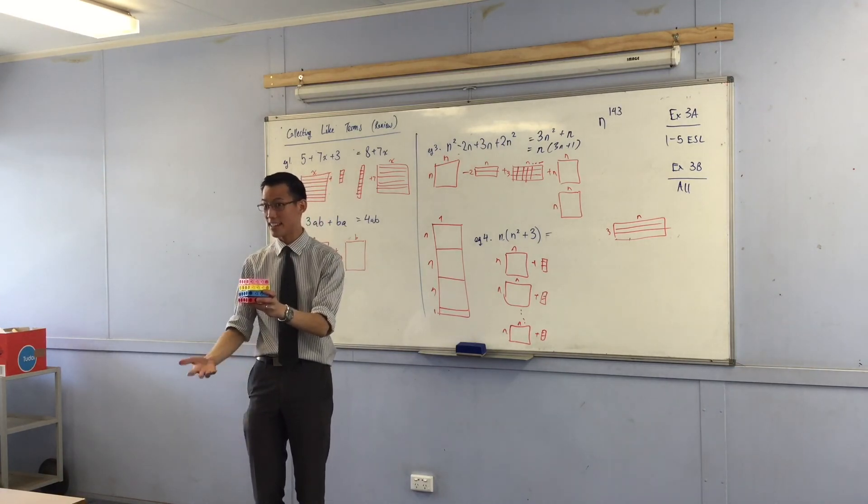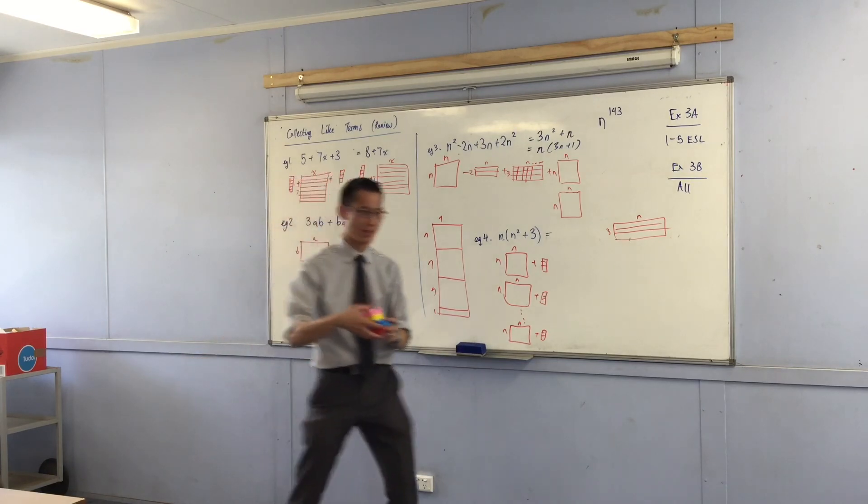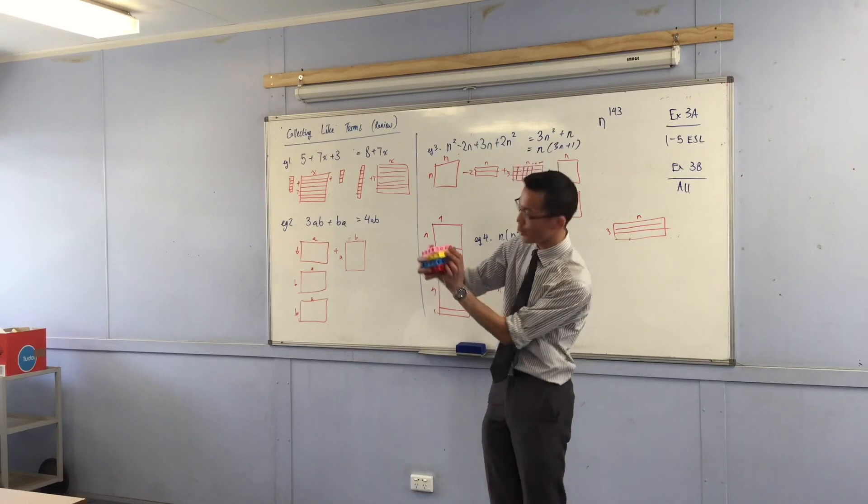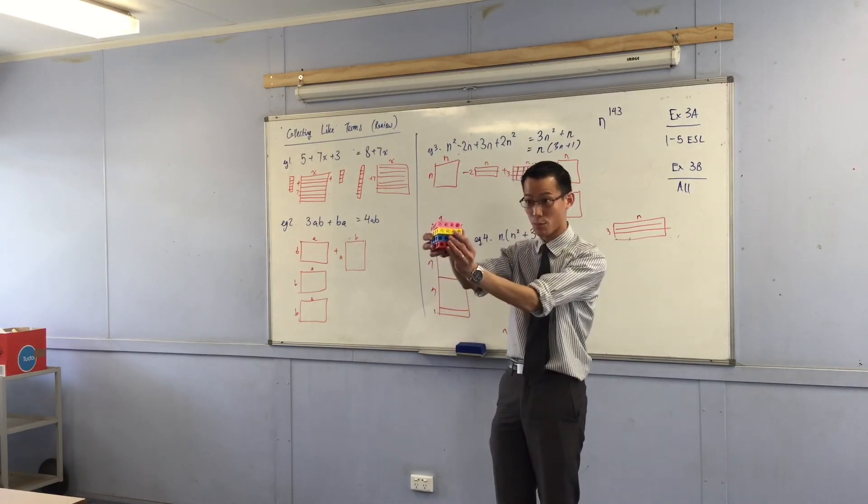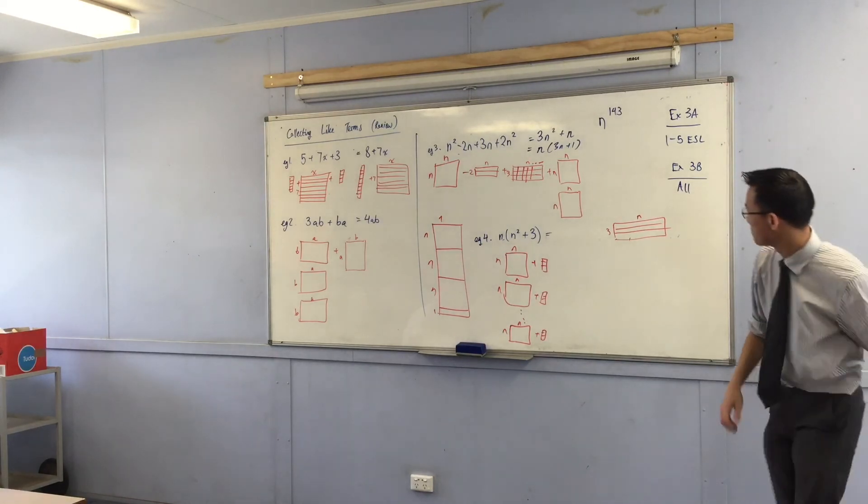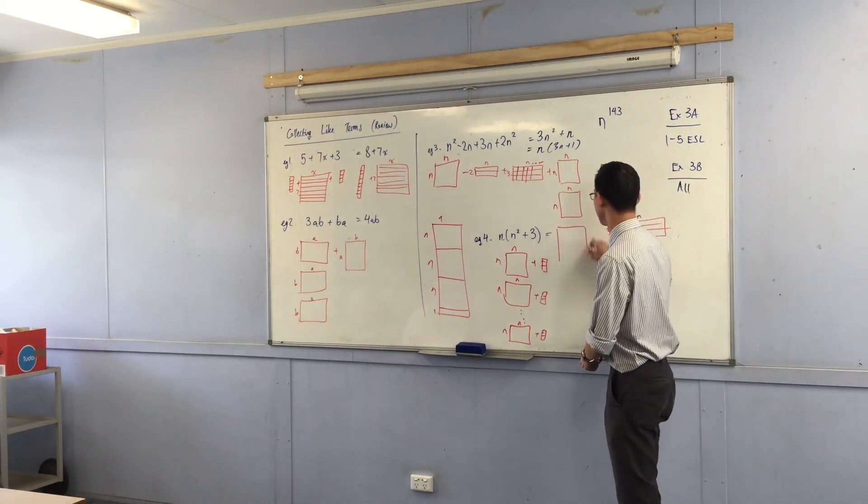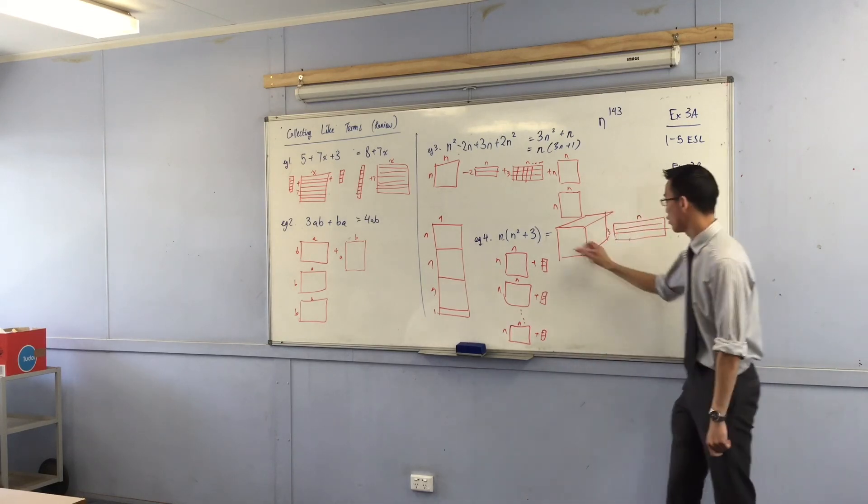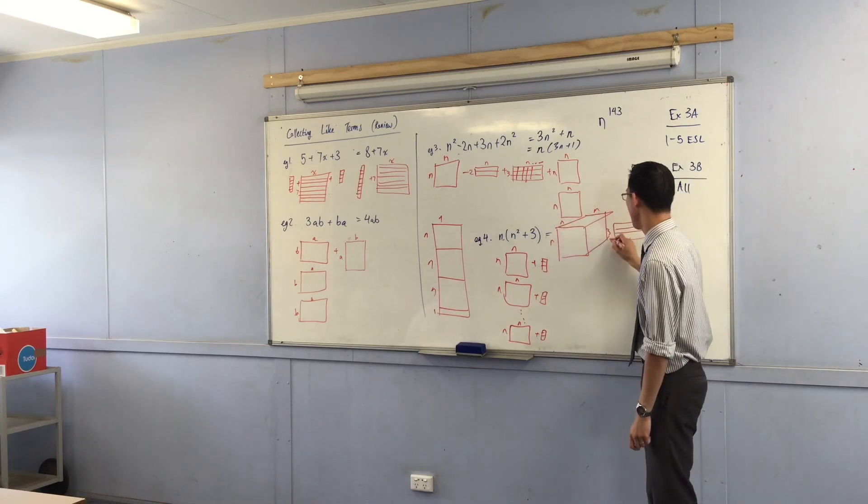It's n cubed, right. Because we call it cubed. We don't say n to the power of three, we call it n cubed because it's a cube. That's the name we give to this shape. So I'm going to draw it. There he is, there's n cubed.